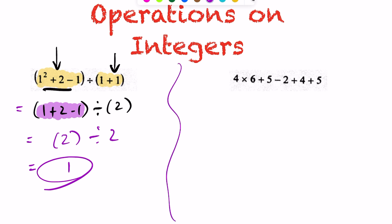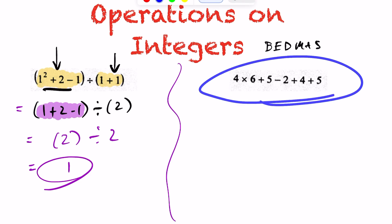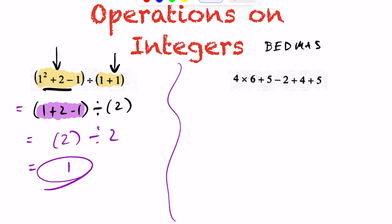Moving on to the next question. Going through BEDMAS: B is for brackets — I have no brackets. E for exponents — I have no exponents. D for division — no division symbol. Then we have multiplication, so multiplication happens right here. I'm going to take care of that first. This is going to end up being 24.